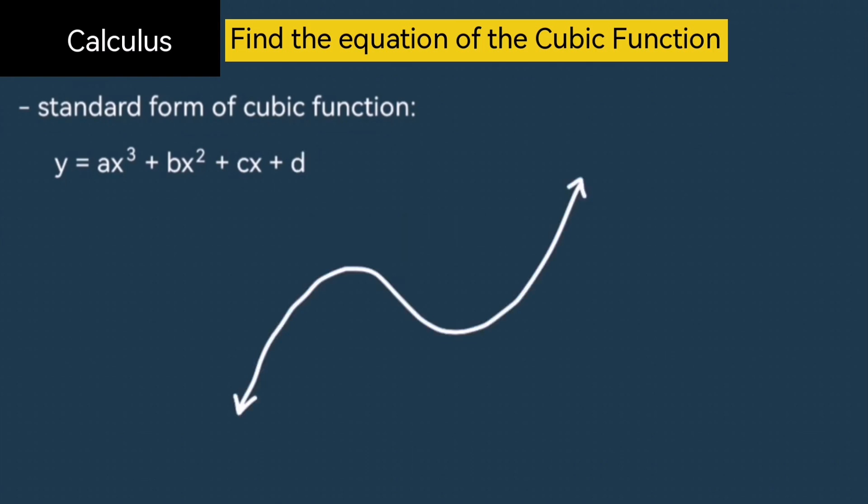Also notice that a cubic function generally has three x-intercepts or three roots. However, depending on where the x-axis is with respect to the graph, we might have only two or one x-intercept. If it was two x-intercepts, notice that the x-axis cuts through one of the turning points of the cubic function. And if it only has one x-intercept, the turning points are either both above the x-axis or both below the x-axis.